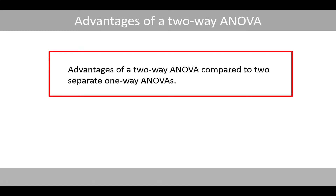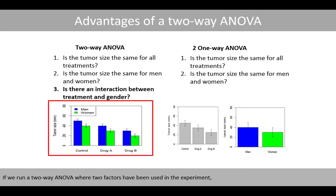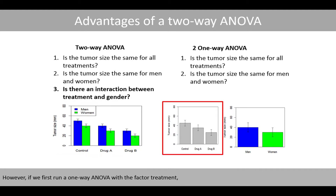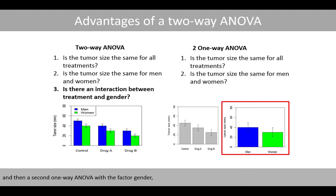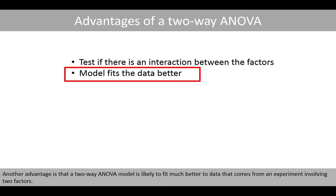We'll now have a look at the advantages of a two-way ANOVA compared to two separate one-way ANOVAs. The main advantage is that we can test for an interaction between the two factors and that our model fits better to the actual experimental design. If we run a two-way ANOVA where two factors have been used in an experiment, we can test if there is an interaction between them. However, if we first run a one-way ANOVA with a factor of treatment and then a second one-way ANOVA with a factor of gender, it is not possible to test for an interaction between the two factors.